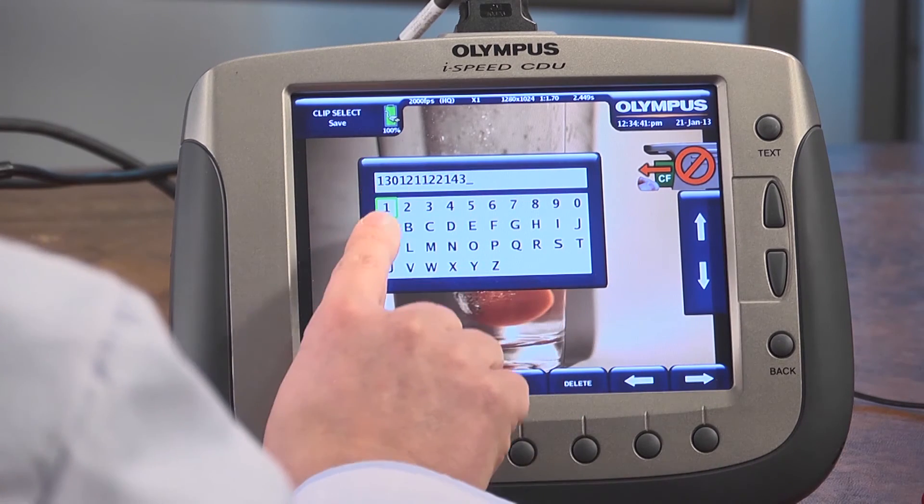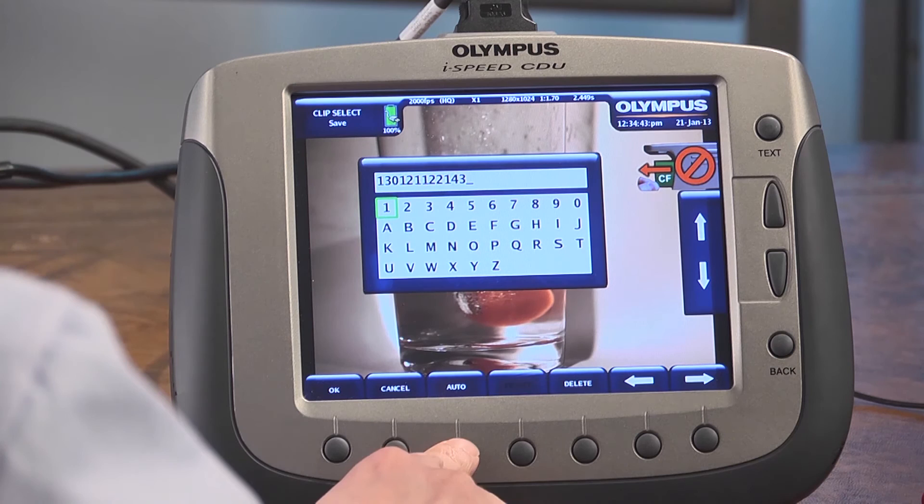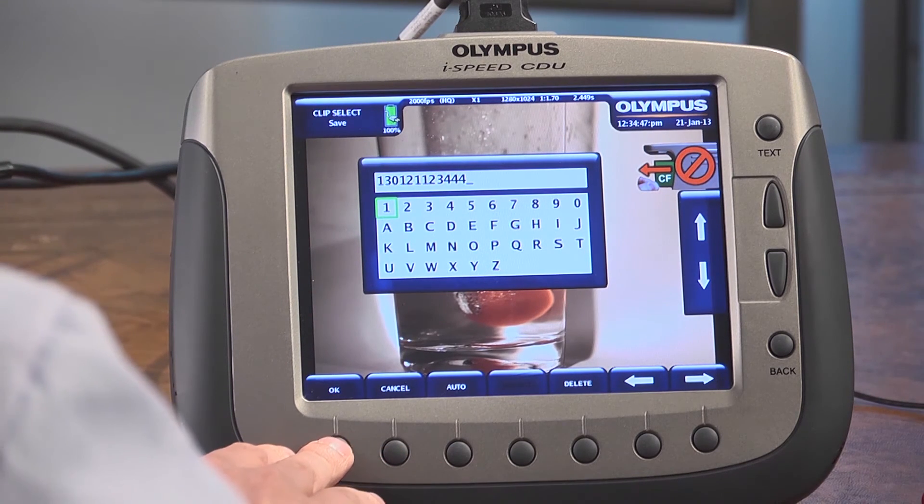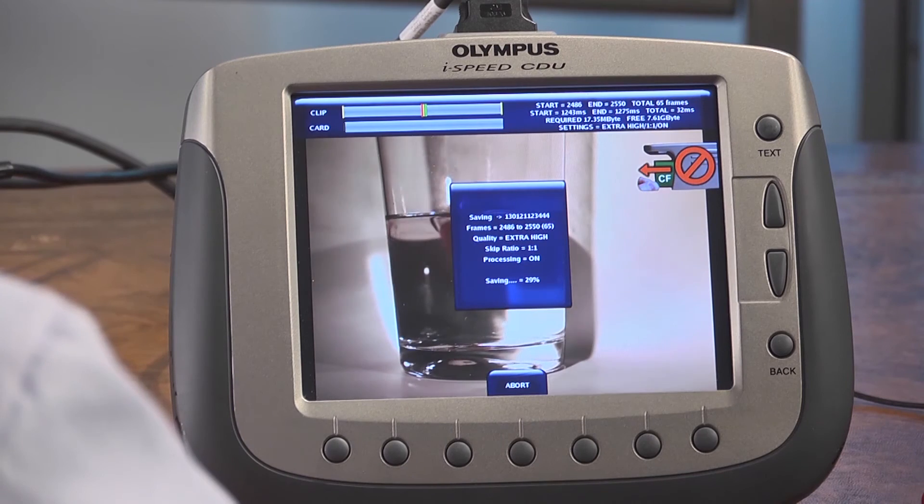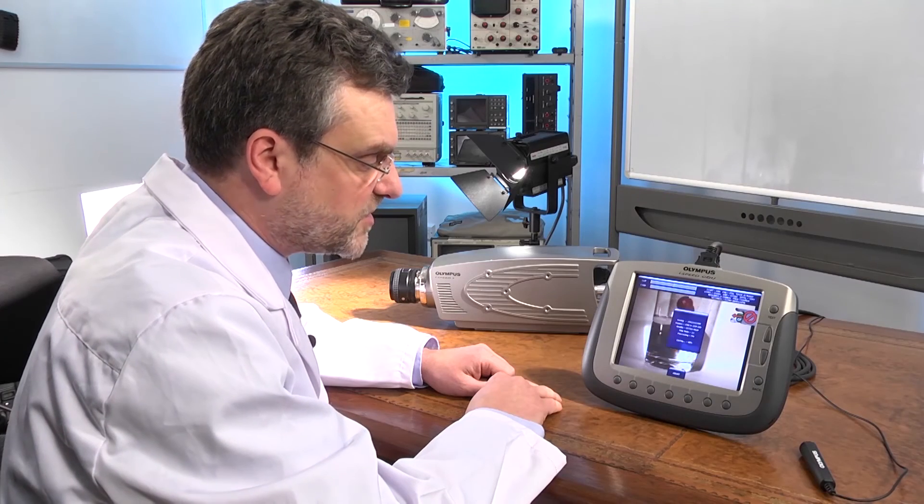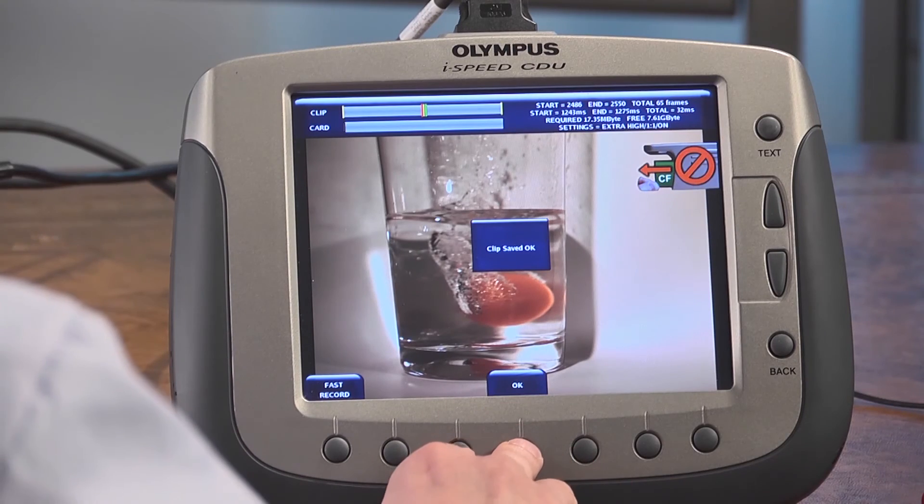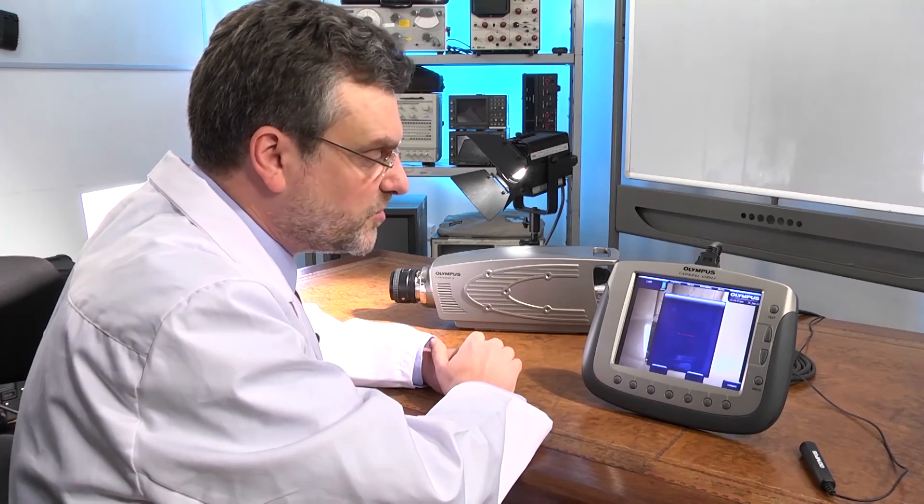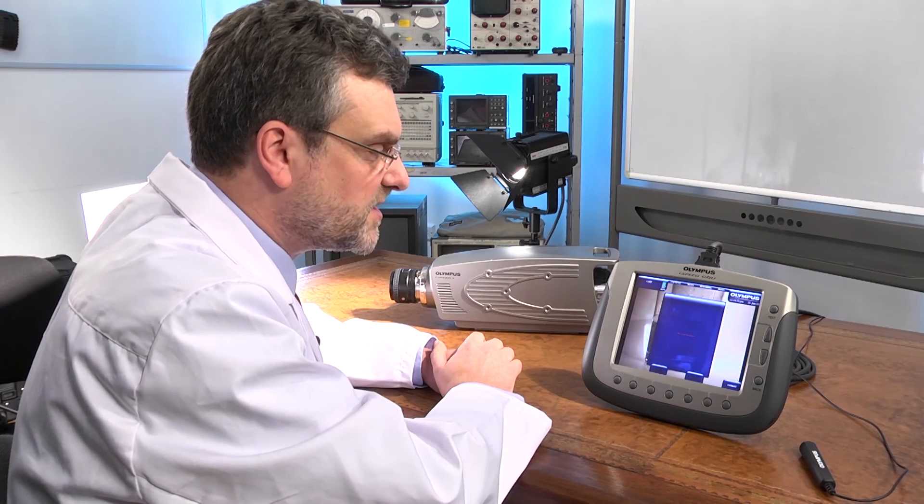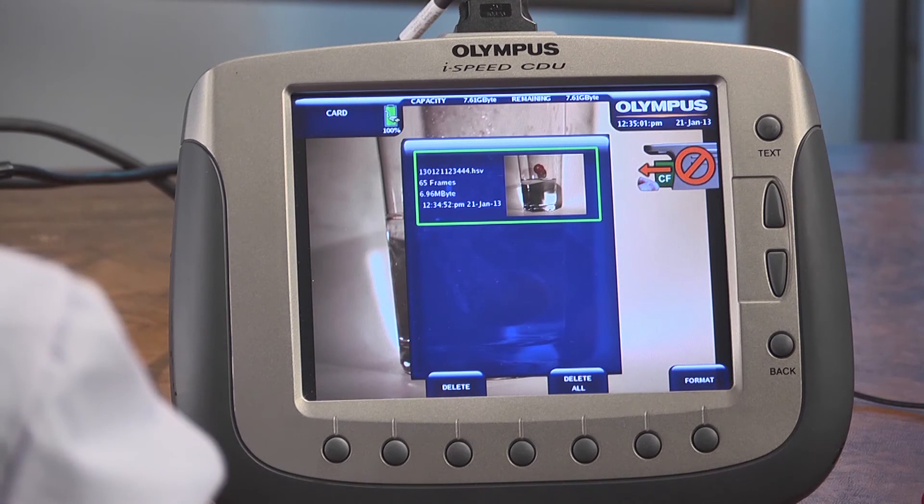I could if I wanted to type in a name but in this case the camera has provided me with an automatic name. I'll press OK and the camera will save onto the compact flash card. There we go. It's completed the save. I'll press OK and it will quickly give me a preview of the card to show me that my clip has indeed been saved correctly.